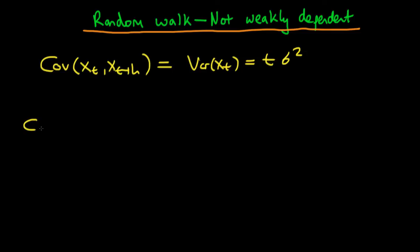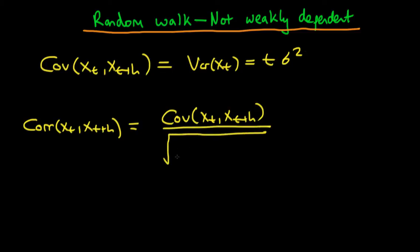Then we need to derive the correlation of xt with xt plus h. The correlation of xt with xt plus h is just defined as the covariance of xt with xt plus h, all divided through by the square root of the variance of xt times the variance of xt plus h.